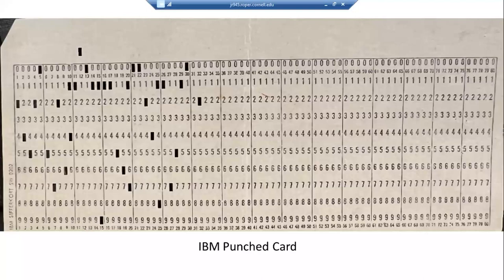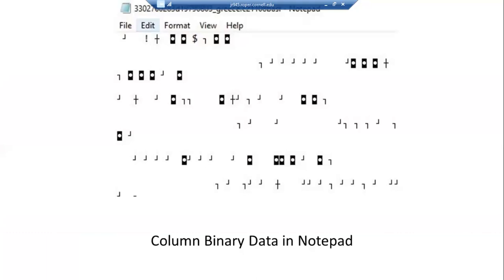For those who aren't familiar, column binary is a file format that was once frequently used to store survey data from punched cards — paper cards in which holes are punched to represent data points. There are different types of punched cards, but the 80-column IBM card is one of the most common. The columns represent variables and the rows represent possible responses. There is space for 12 possible response values — zero through nine — plus space for two additional punches directly above the zero. If you try to open a column binary file on one of today's computers, you'll see something unreadable, so it needs to be converted to a modern data format.